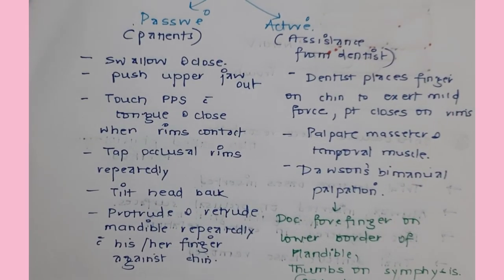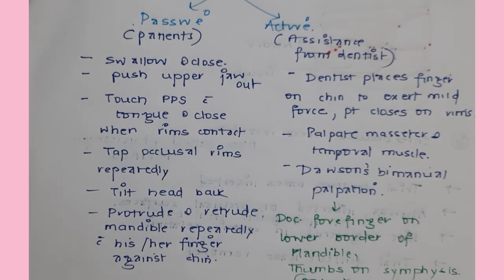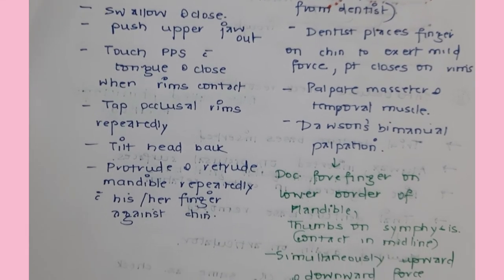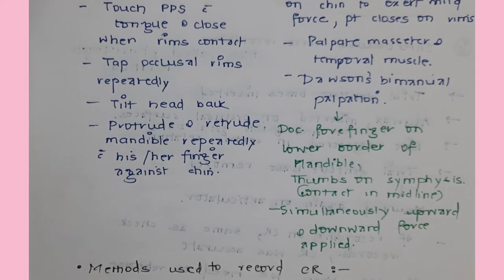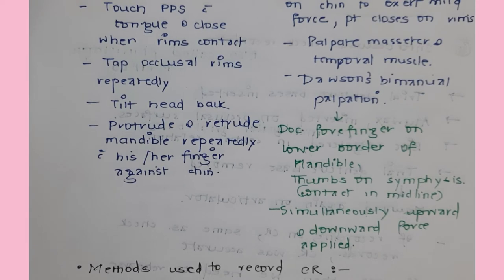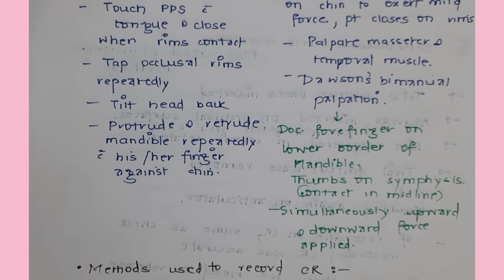In active methods, the dentist places a finger on the chin to exert mild force while the patient closes on the rims. Also, palpation of elevator muscles like masseter and temporalis. Another very important active method is Dawson's bimanual palpation, where the dentist's four fingers are placed on the lower border of the mandible and thumbs are placed on the symphysis at the midline forming a C-shape. The doctor simultaneously pushes pressure upward on the lower border and downward through the thumbs on the symphysis.